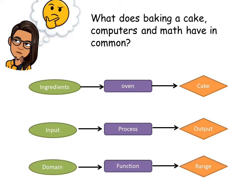In math you have a domain, a function, and a range, and we're going to go into detail with that. A domain is a value that goes through some processing and produces another value called a range. Don't worry — let's go into some details.